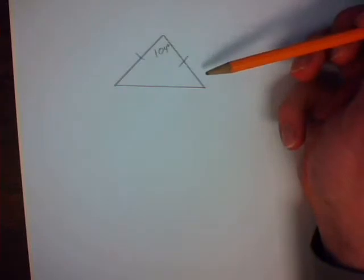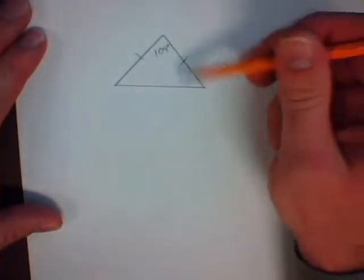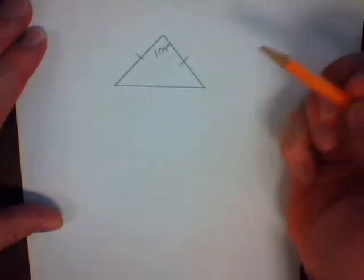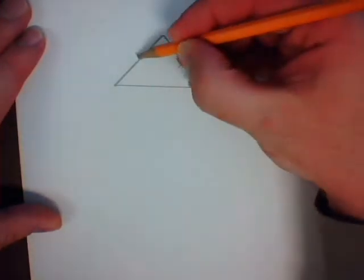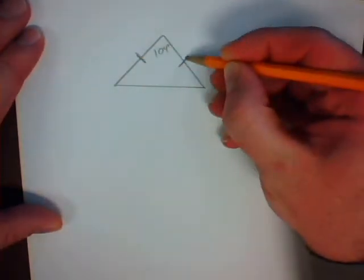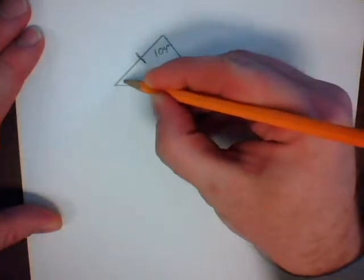This is known as an isosceles triangle, one of the key pieces of information that we know is that because these two line segments are equal, these two angles will also be equal.